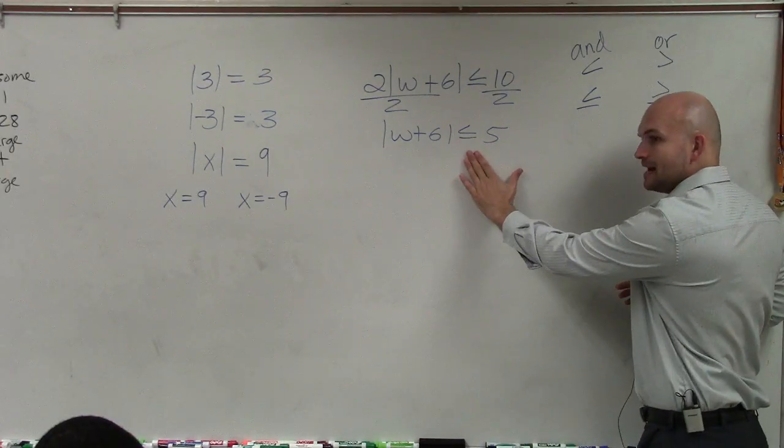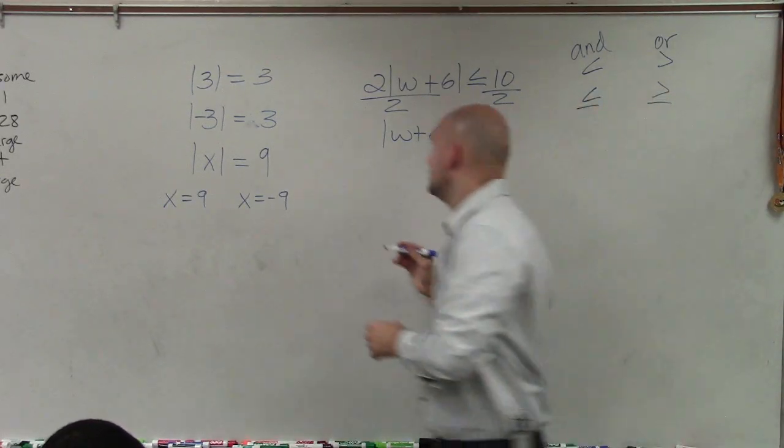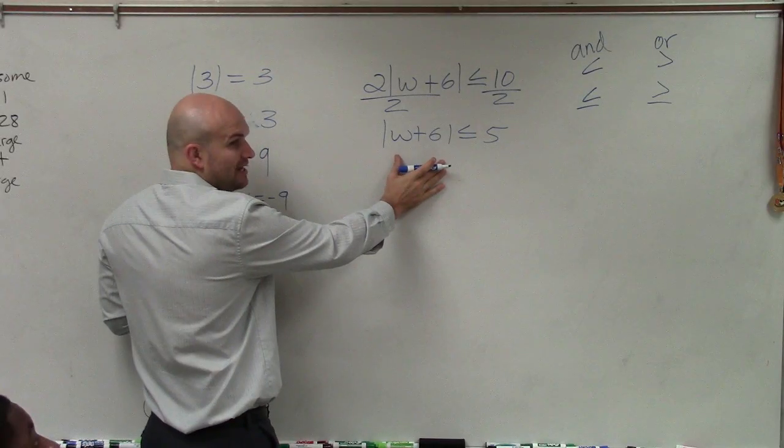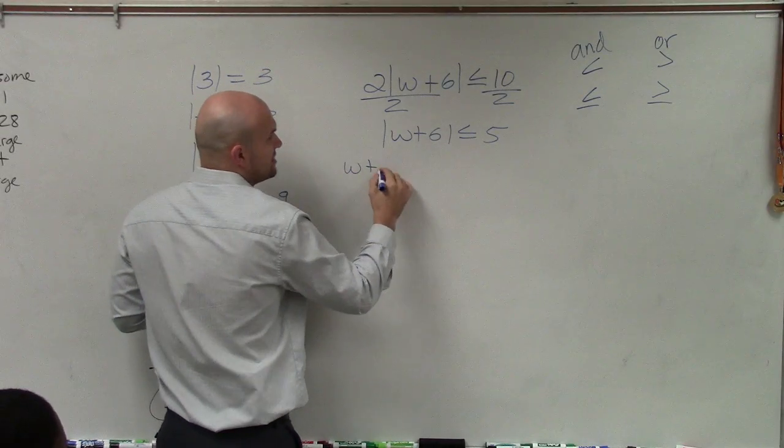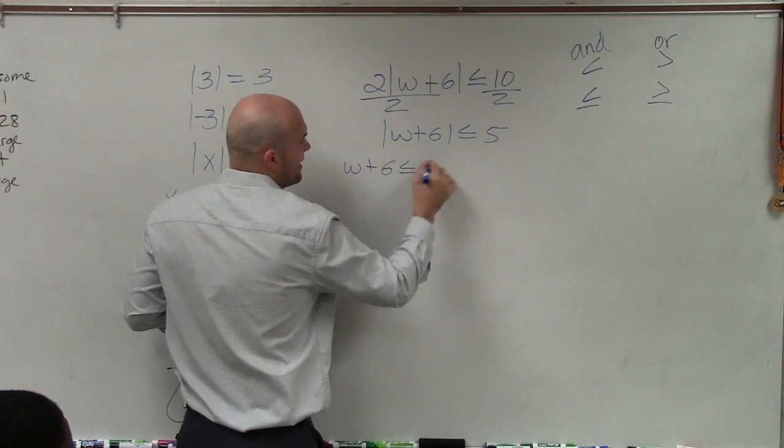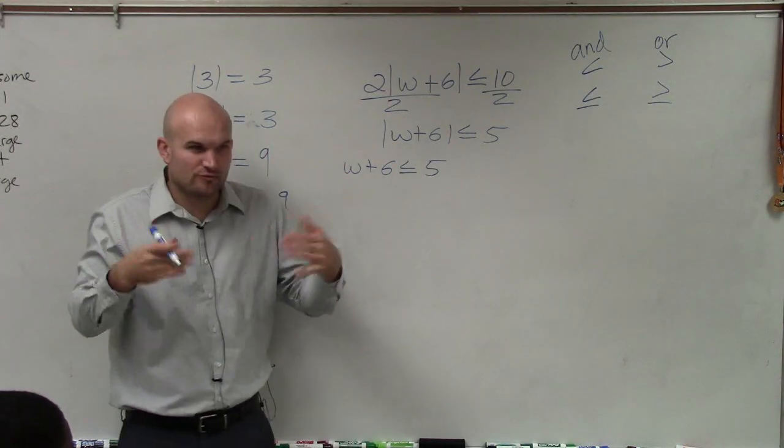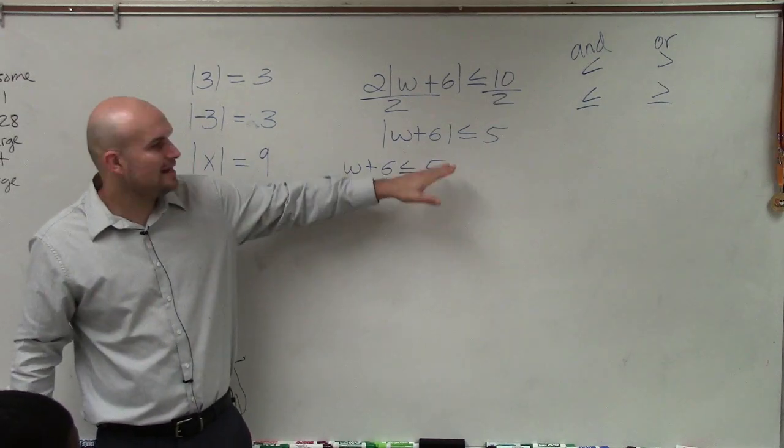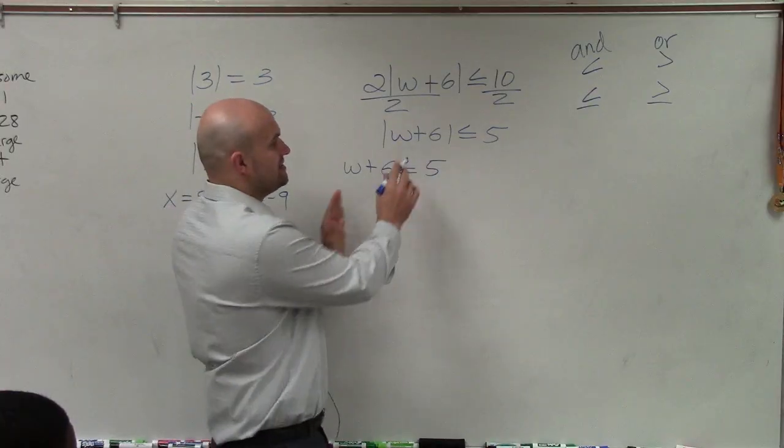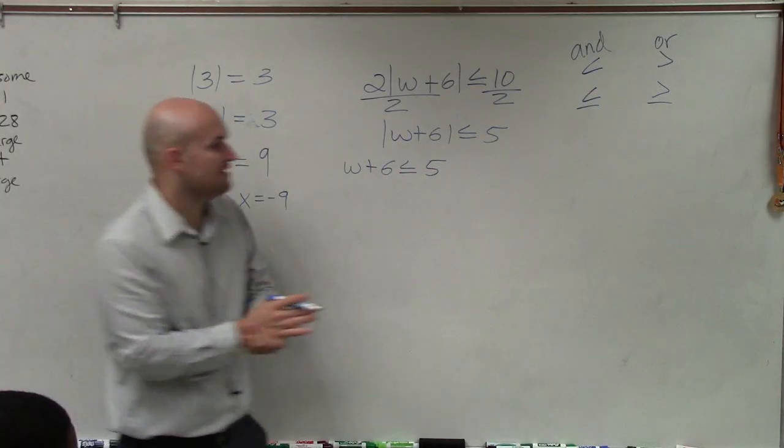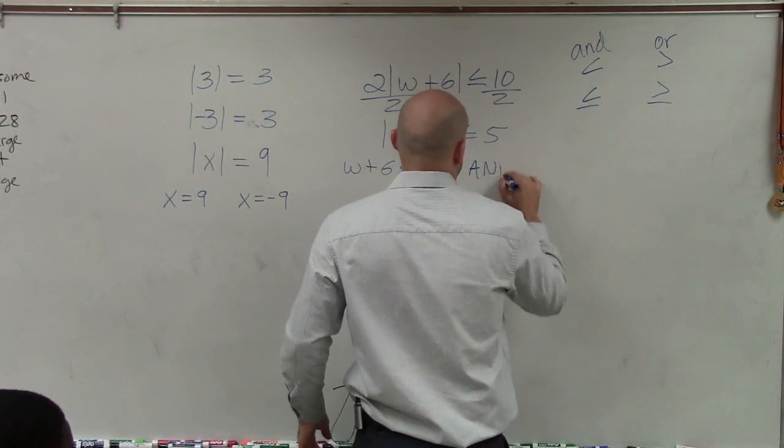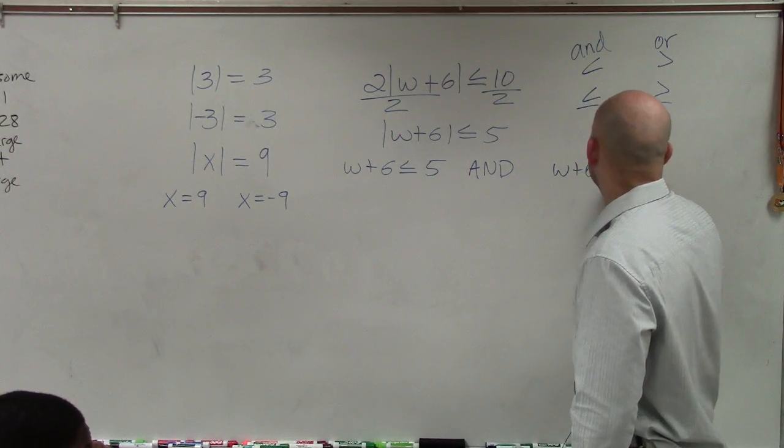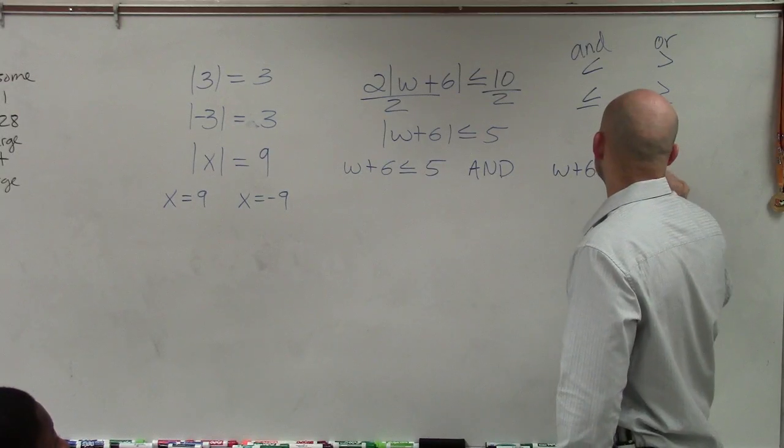So how do I write this then as a compound inequality and? Basically, ladies and gentlemen, remember we have two cases. w plus 6 is less than or equal to 5. And then what I like to do is rather than trying to rewrite it actually as like an inequality, which you can do, is remember we have to take a look at the positive and the negative. So this can be w plus 6 is less than or equal to 5. And, so you just write in, and w plus 6 is greater than or equal to negative 5.